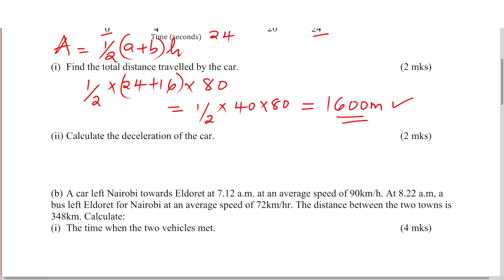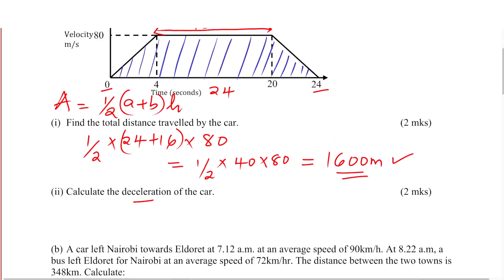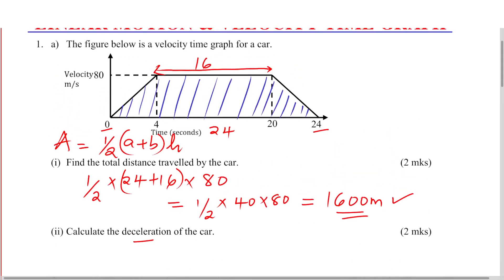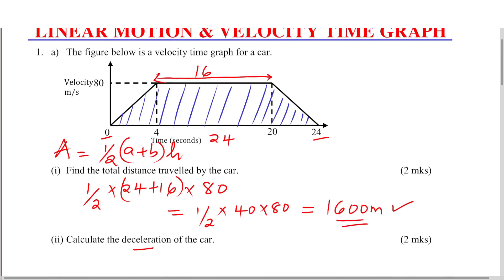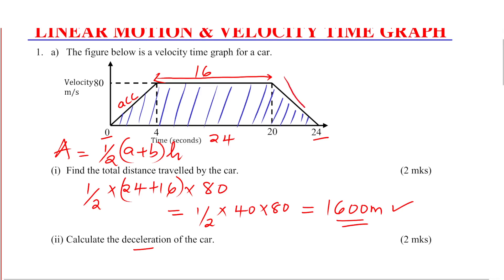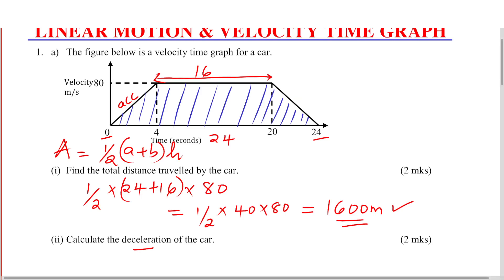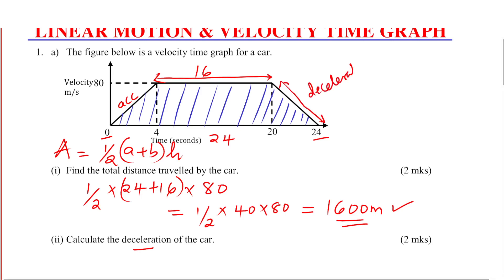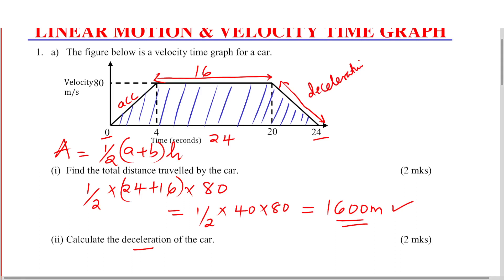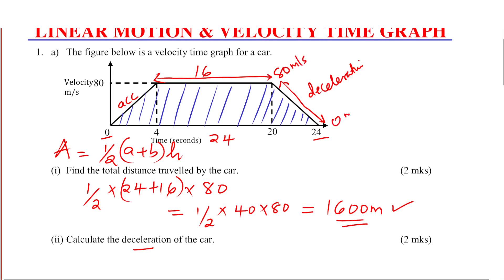Part 2: Calculate the deceleration of the car. Deceleration is when the speed reduces. Looking at this graph, from 0 to 4 that is acceleration, then there is a constant speed at 80 meters per second, then this is the point where we have deceleration — where the speed reduces from 80 meters per second to 0 meters per second.